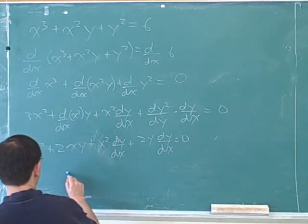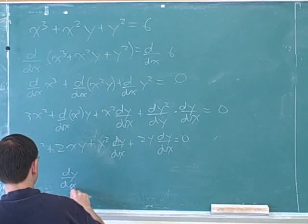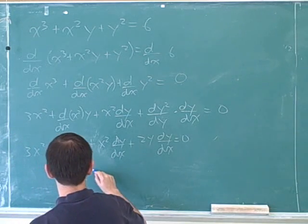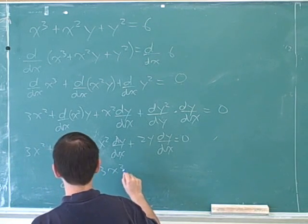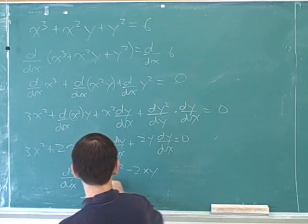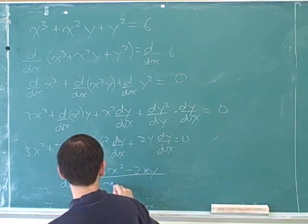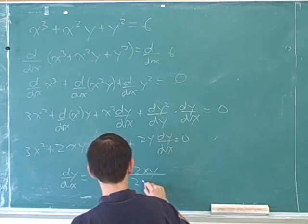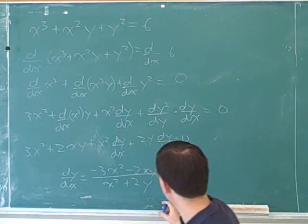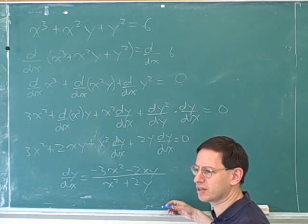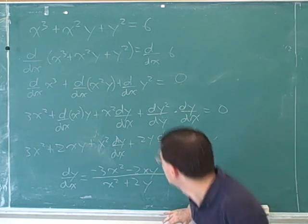So now we just solve for dy over dx. So it looks like that's going to be negative 3x squared minus 2xy over x squared plus 2y. So if you solve this for dy dx I think this is what you get? Yes. How about you guys? Yes. Okay. Good. Thank you.